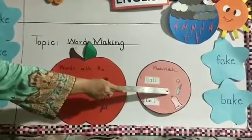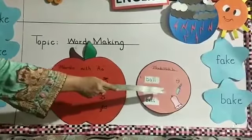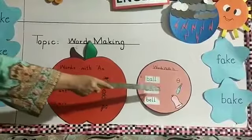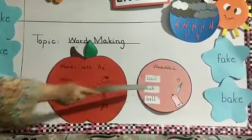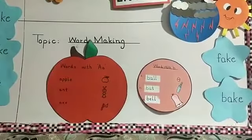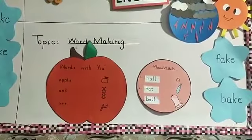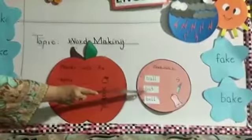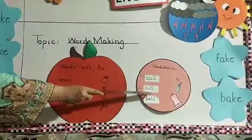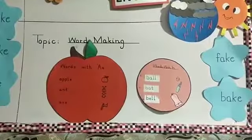Look here. What is this? This is a picture of bat. And what is the spelling of bat? B-A-T, Bat.